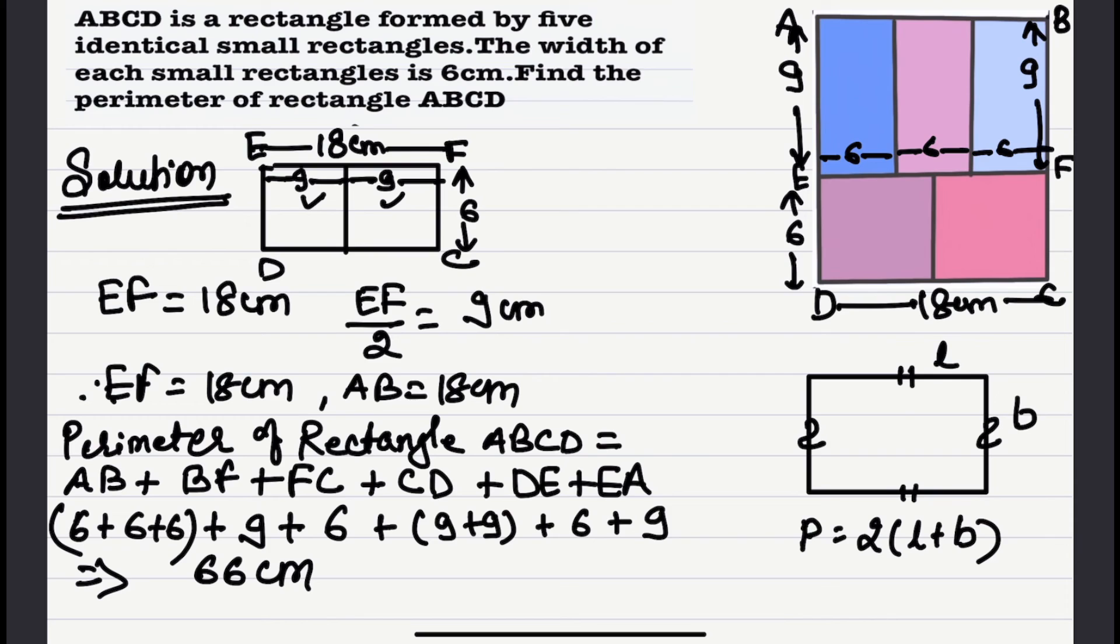So the perimeter of the rectangle ABCD with 5 small identical rectangles with width 6 centimeters each is 66 centimeters.